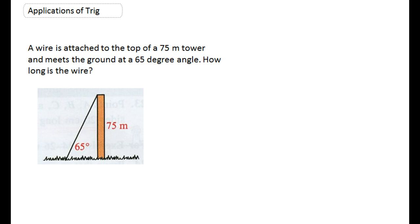Let's look at our first problem. A wire is attached to the top of a 75 meter tower and meets the ground at a 65 degree angle. How long is the wire? Let's call the length of the wire x. That's what we're looking for.